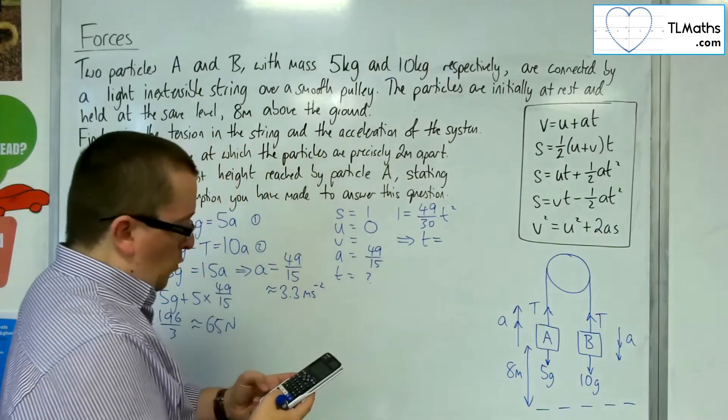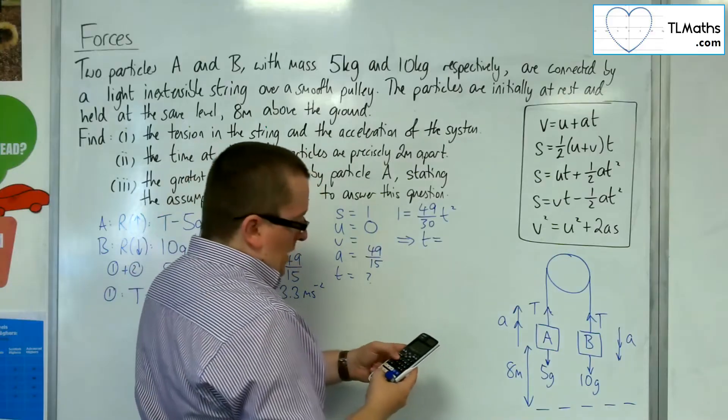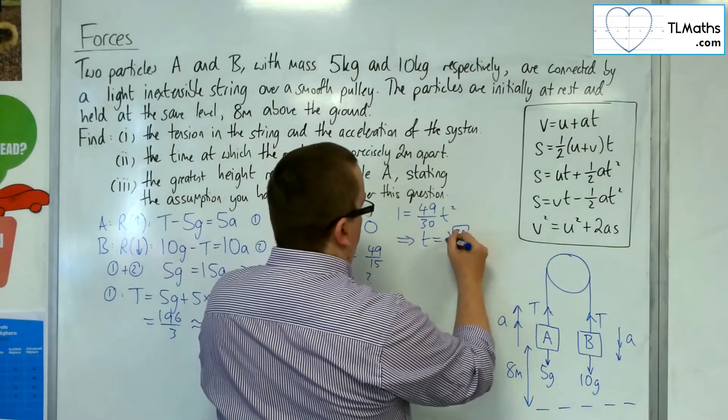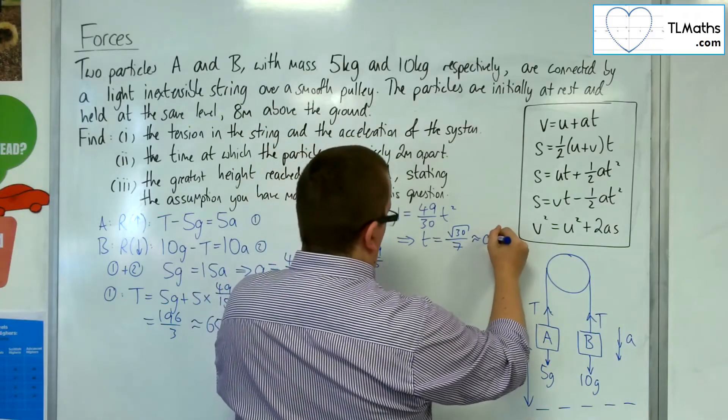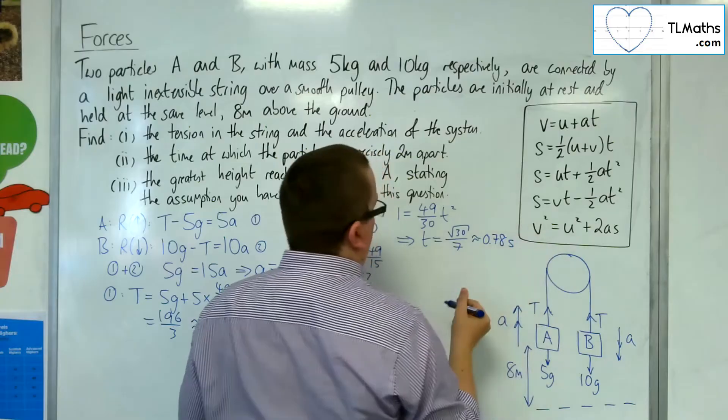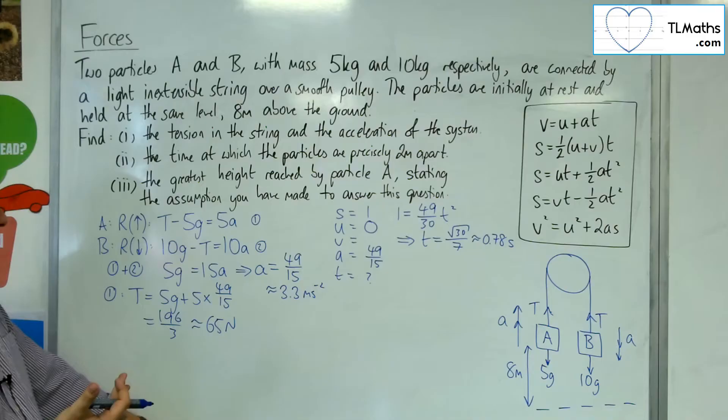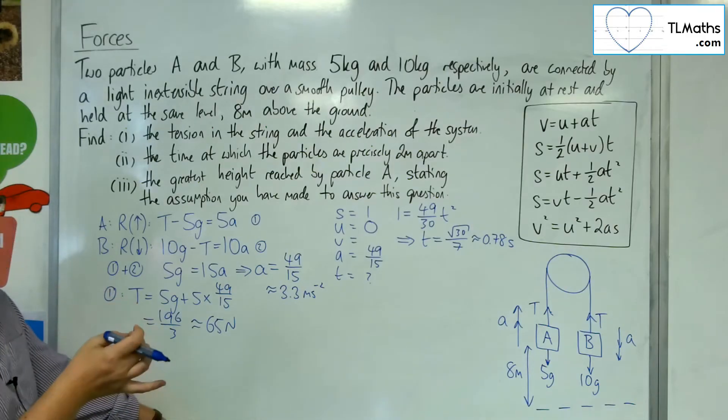So, if I divide 1 by 49 over 30, I get 30 over 49, square root that, and I get root 30 over 7, which is approximately 0.78 seconds. Okay, so 0.78 seconds to two significant figures. Okay, so that is the time at which the two particles are precisely 2 meters apart.